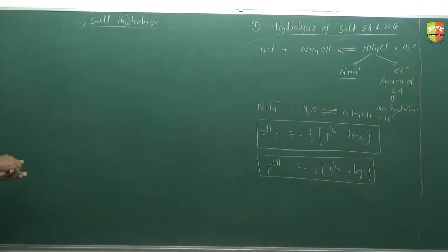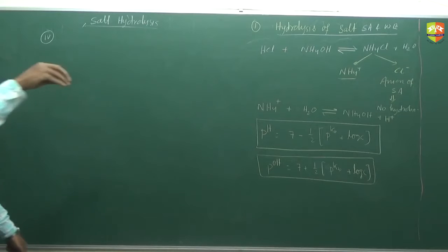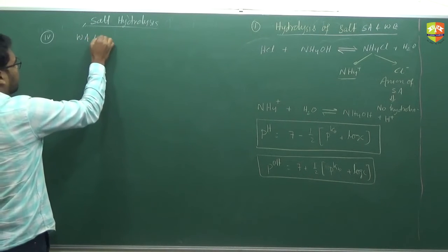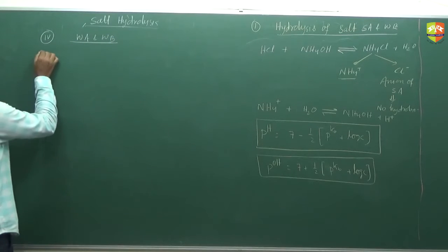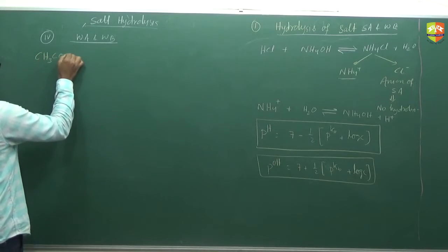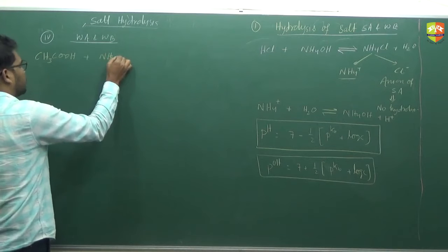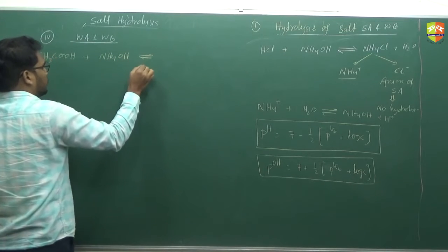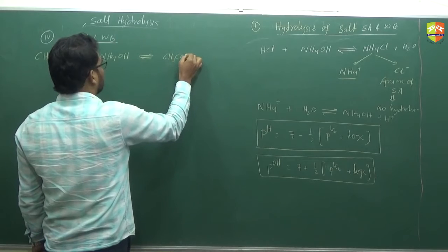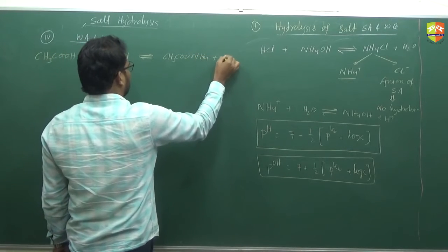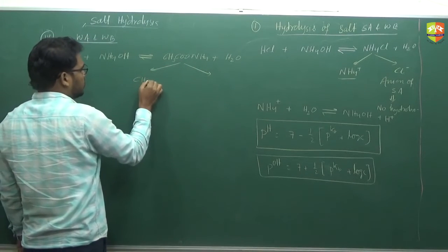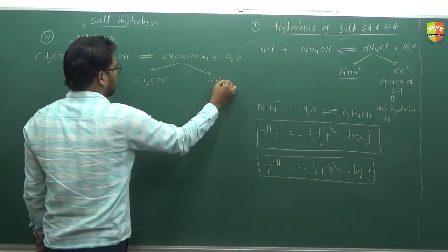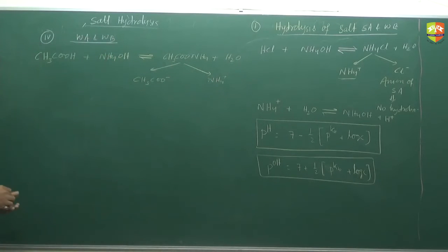Last one: write down hydrolysis of salt of weak acid and weak base. Hydrolysis of salt of weak acid and weak base. Weak acid is CH3COOH, weak base is NH4OH. The salt formed is CH3COONH4. The ions are CH3COO⁻ and NH4⁺ — both will undergo hydrolysis.